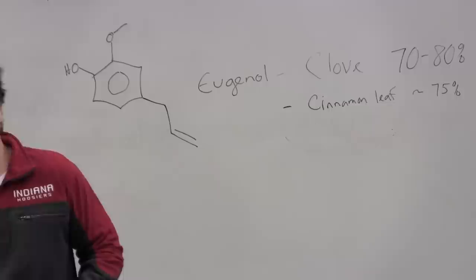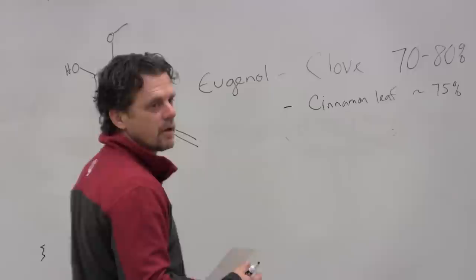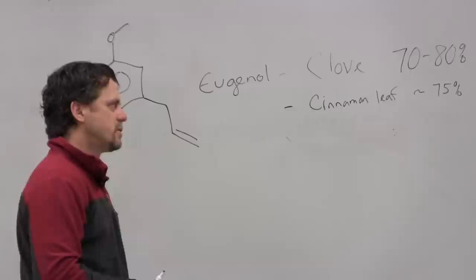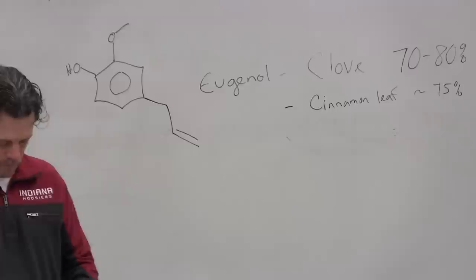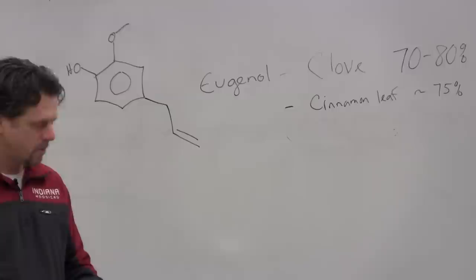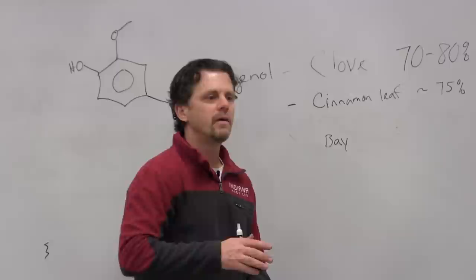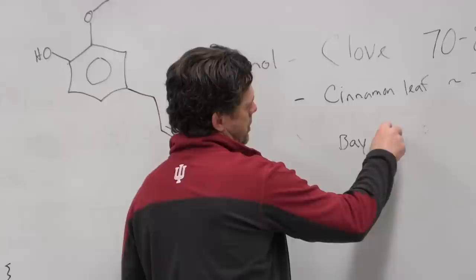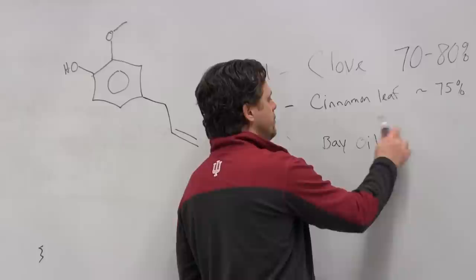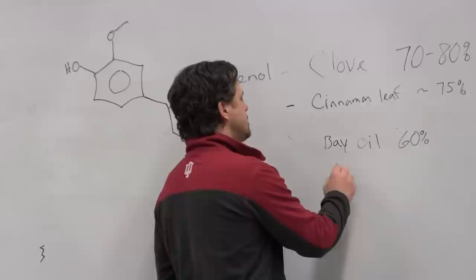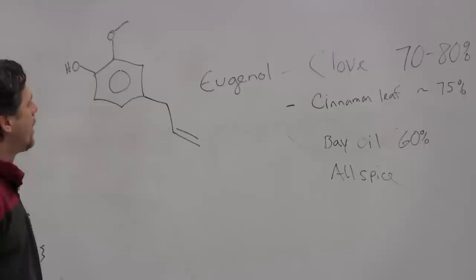The cinnamon bark is a very expensive, valuable oil, a couple hundred to several hundred dollars a kilo, depending on the source. Cinnamon leaf is a mass-produced, very inexpensive oil, typically in the $10 to $20 range. Other oils that would have eugenol are bay, and when I say bay, there's two things that people refer to as bay. One is bay laurel, which is not this one. Bay oil, percentage-wise, could be say 60 percent. It's also in allspice. So, it's in a lot of things.